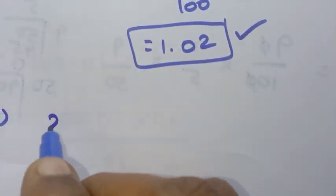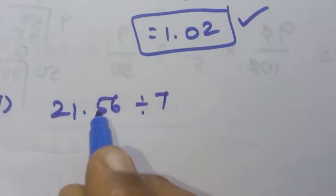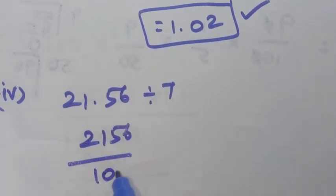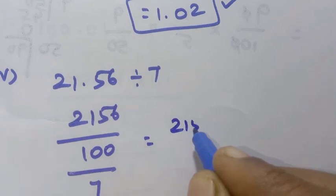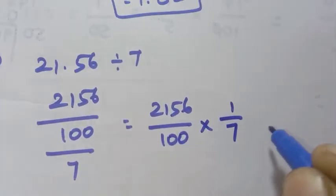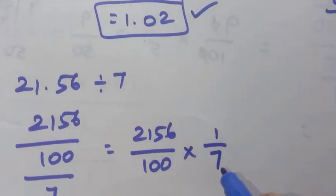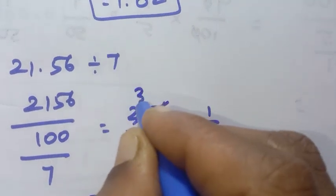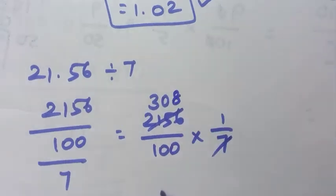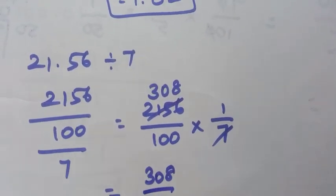Fourth one: 21.56 divided by 7. There are two decimal places, so 21.56 is 2156 by 100. Divided by 7 by 1, giving 2156 by 100 into 1 by 7. Cancel 7: 7 threes are 21, remainder 0; 7 eights are 56. So we get 308 by 100, which is 3.08 as the answer.